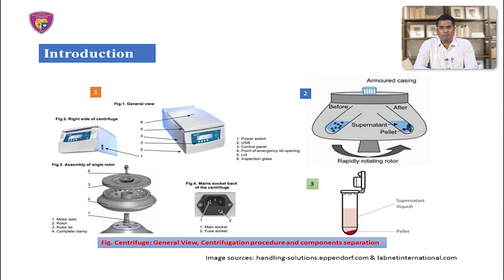As shown in the diagram, the different components of a centrifuge include a power switch, USB control panel, point of emergency, lid opening, and lid inspection glass. Inside the centrifuge there is a rotor which has to be assembled by an operator. Rotors are of different types depending on size and RPM. Main components include motor, axle, rotor, rotor lid, and complete clamps.